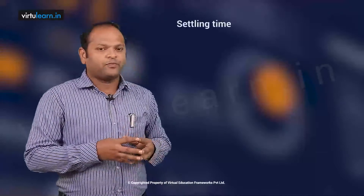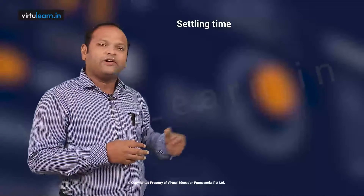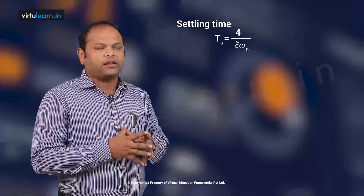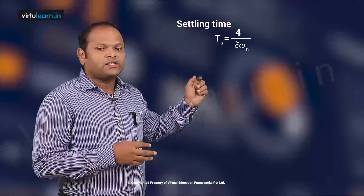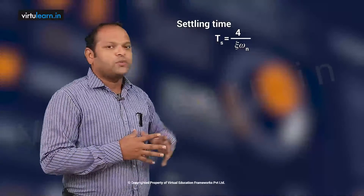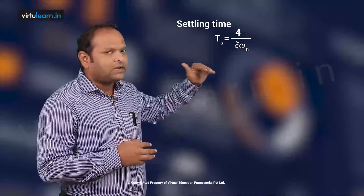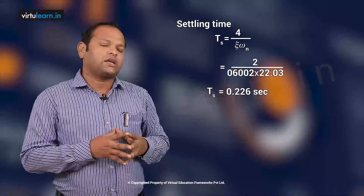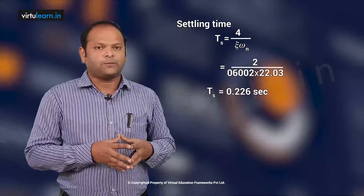For the second part, we calculate additional parameters. Starting with settling time: using the 2% criterion, Ts = 4 / (ζωn). With ζ = 0.6 and ωn ≈ 22, substituting gives Ts ≈ 0.226 seconds.